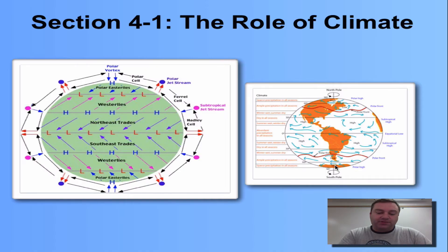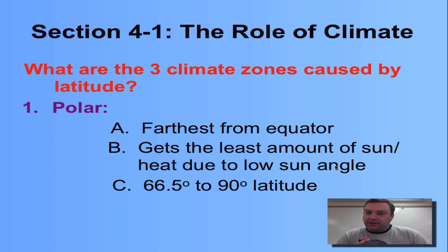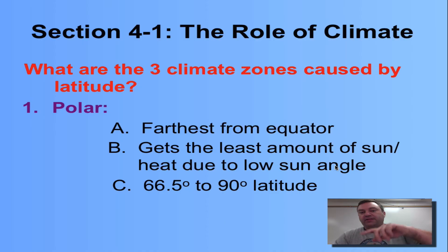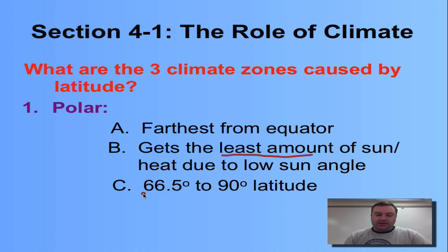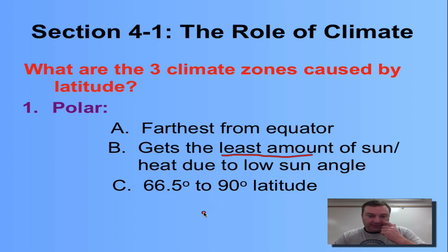Let's learn about the various climate zones. The first climate zone is the polar one, found at the opposite poles of the earth — the North Pole and the South Pole, the Arctic Circle and Antarctica. These are the farthest from the equator, so they get the least amount of sunshine because the sun is at a very low angle. Therefore they're going to have the least amount of heat.